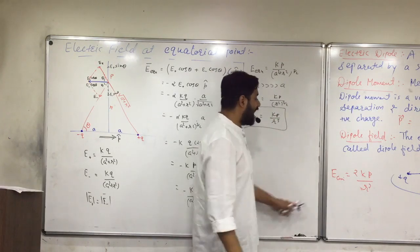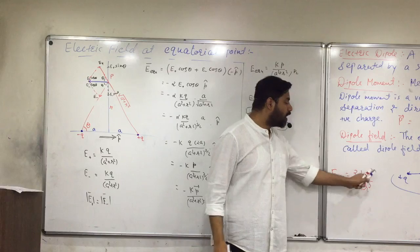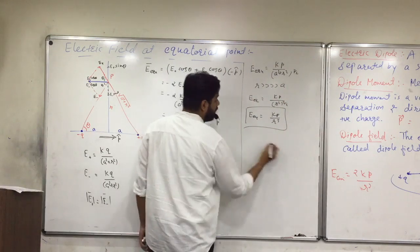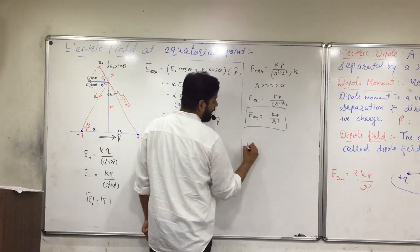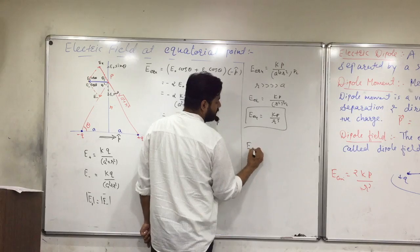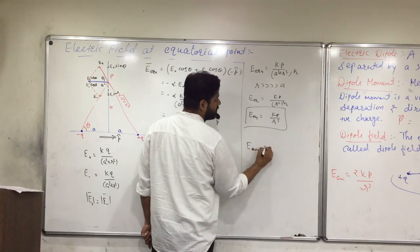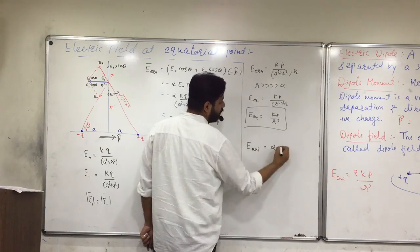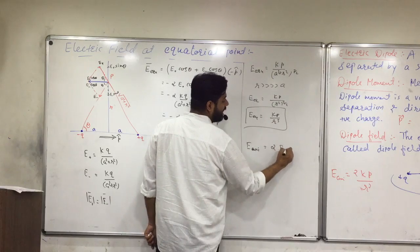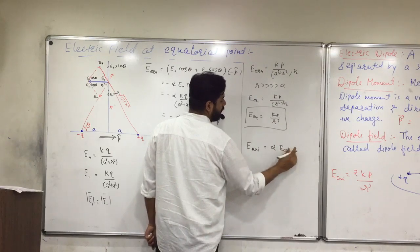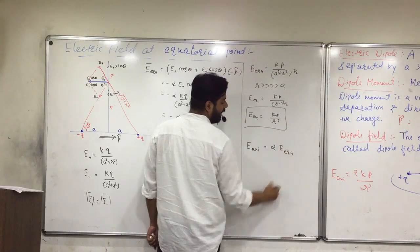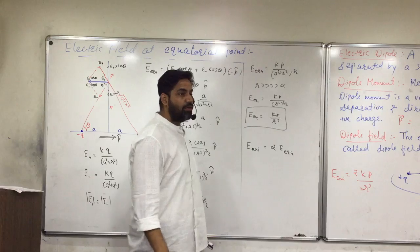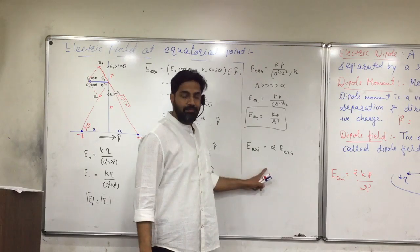And E axial was 2kp upon r cube. So we understand that E axial equals 2 times kp upon r cube, which is 2 times E equatorial. So E axial is double of E equatorial.